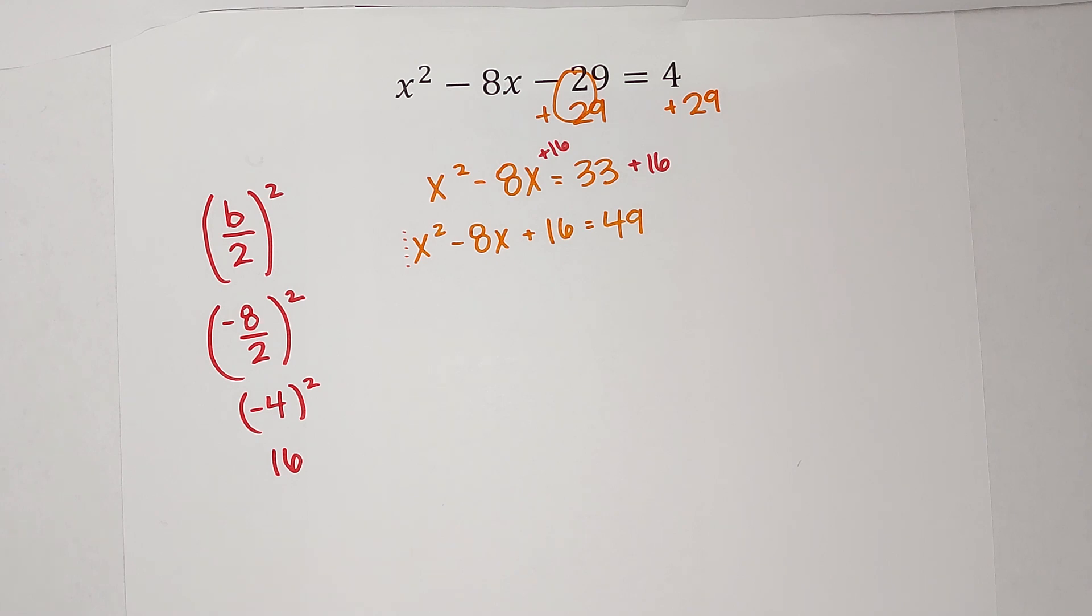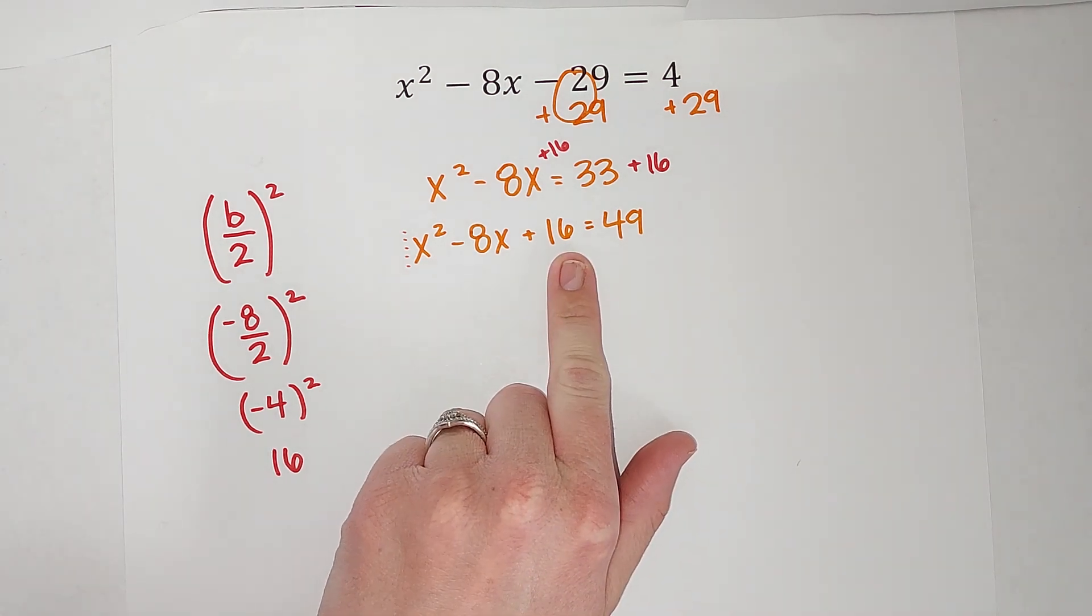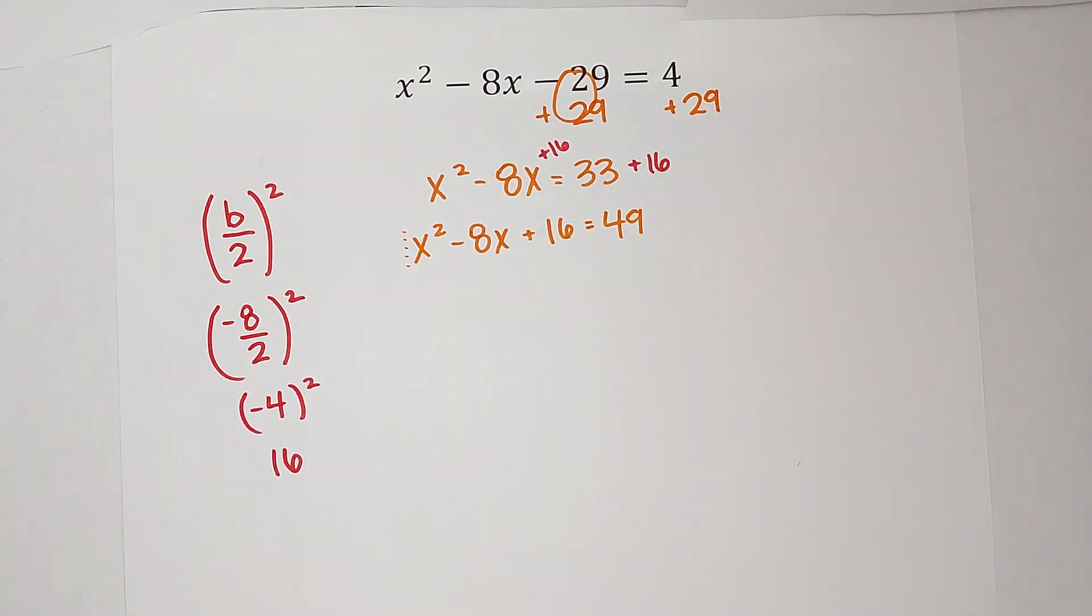And that would be negative 4 and negative 4. Negative 4 times negative 4 gives me 16, negative 4 plus negative 4 gives me negative 8.